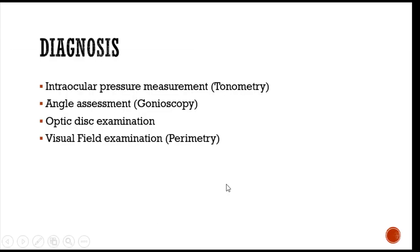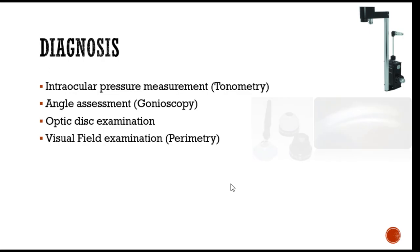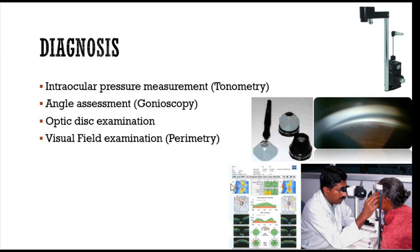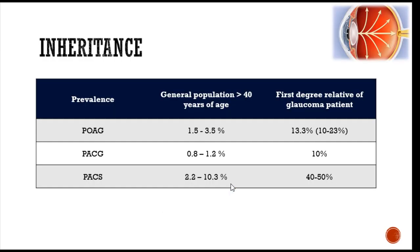Any patient on topiramate who complains of sudden diminution of vision should stop the drug and consult an ophthalmologist. Diagnosing glaucoma requires multiple investigations: tonometry for intraocular pressure, gonioscopy to differentiate open from closed angles, optic disc assessment clinically and with OCT, and visual field testing to confirm the disc appearance correlates with field changes. This is also why population screening is difficult — prevalence is around 5%, with open angle glaucoma at 3.5% and angle closure at 1 to 1.2%.